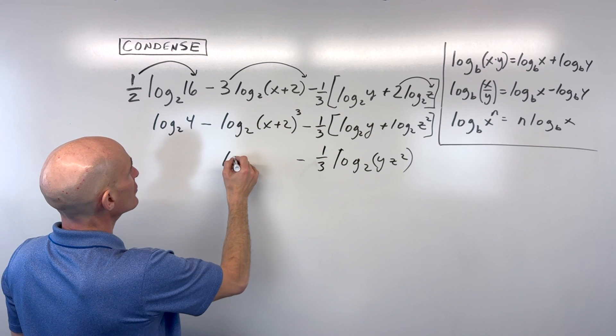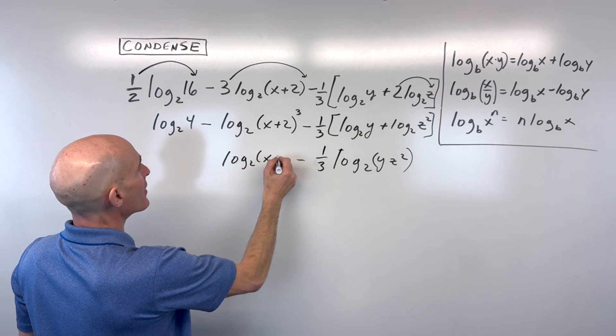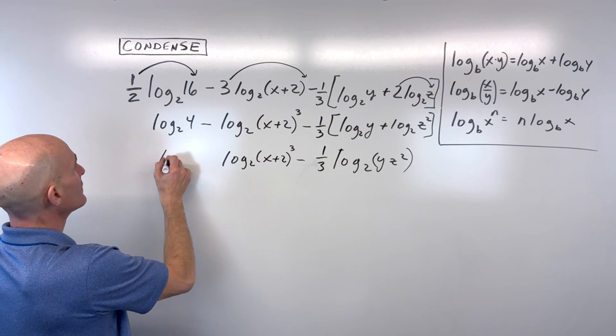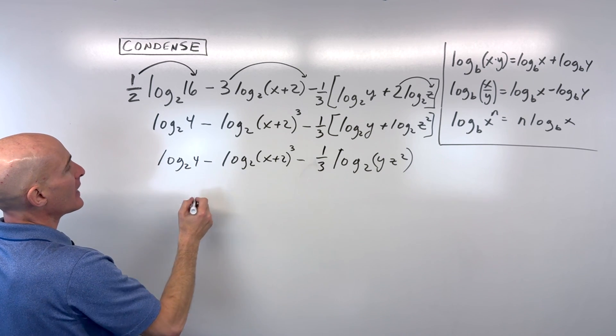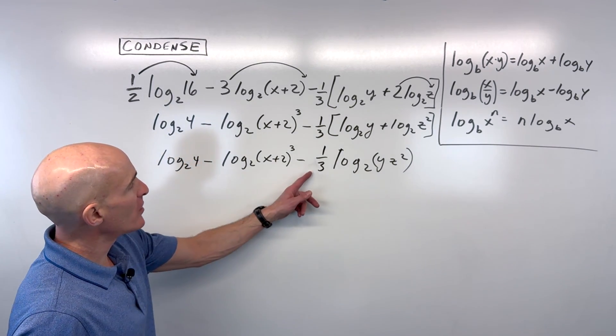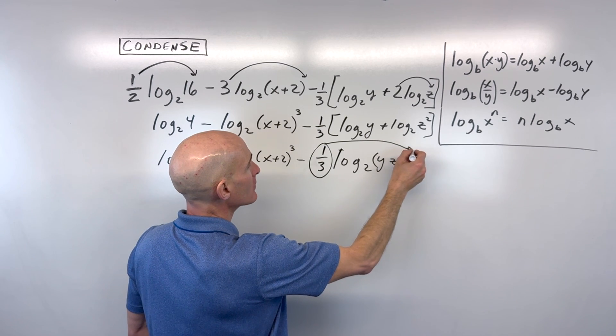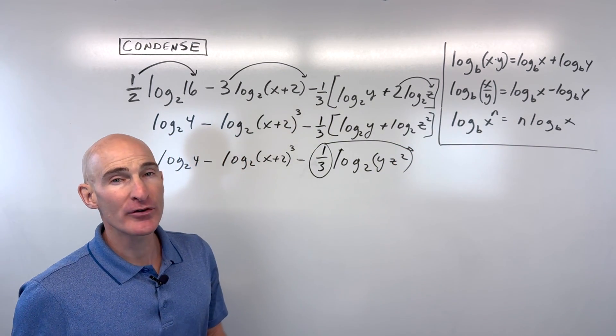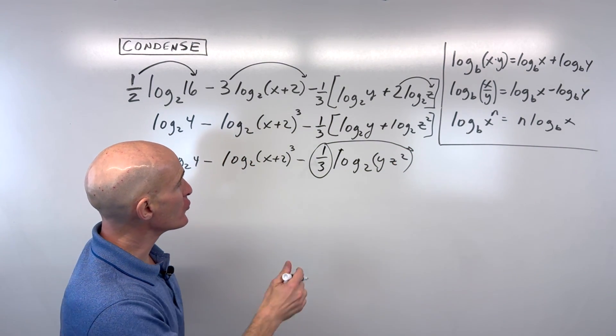And then these two, let's just leave them as they are. And now what do we do? Well, this one-third here we can bring up as a power, right? But what's the one-third power? That's really the cube root.